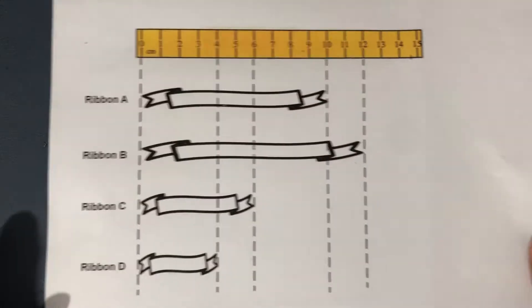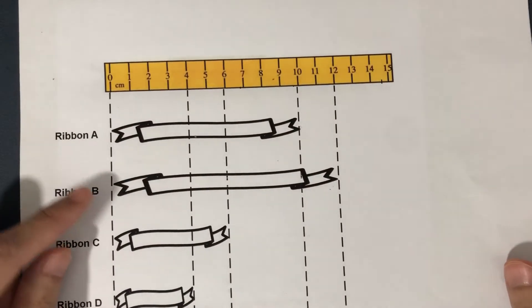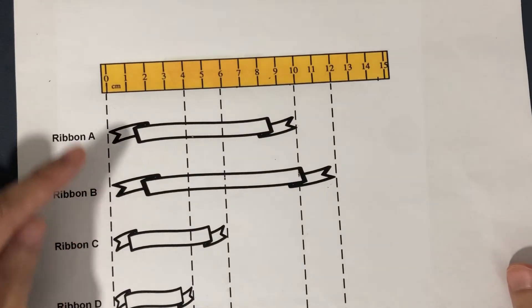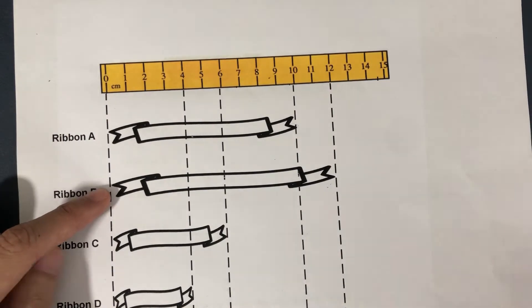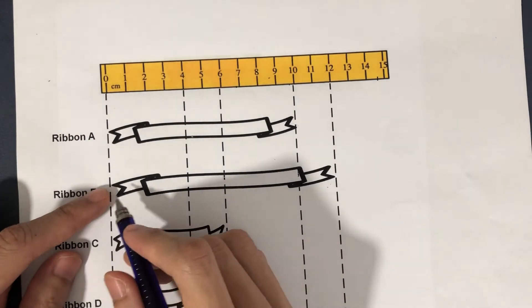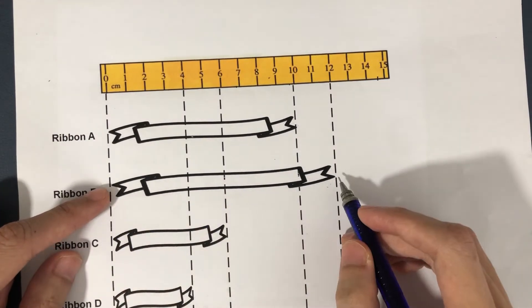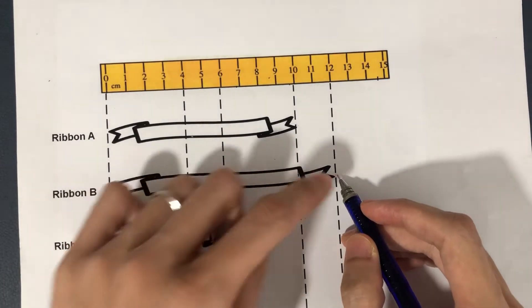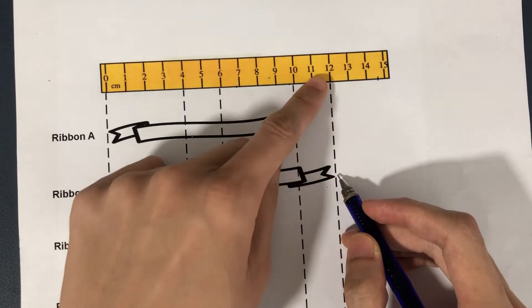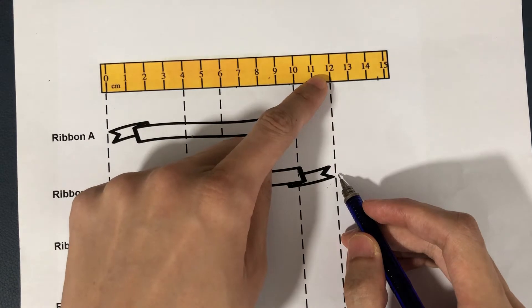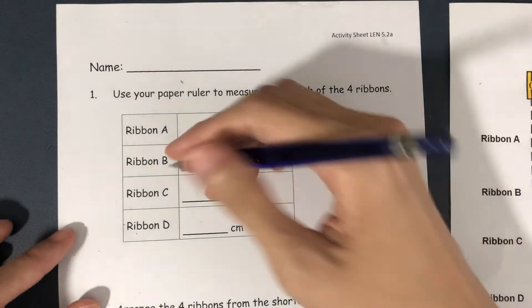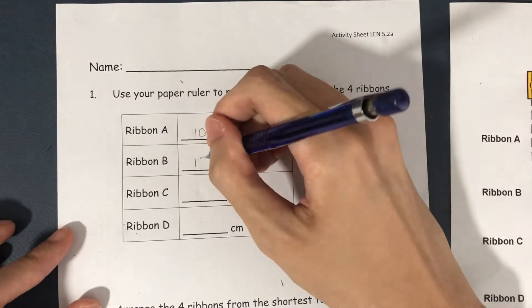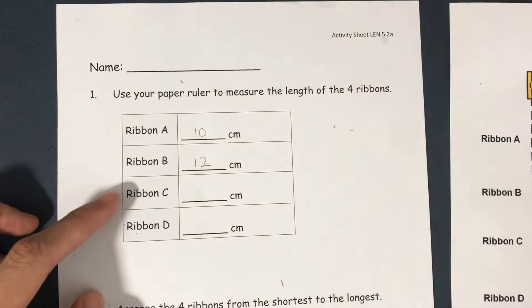Now, Ribbon B. Make sure that one end of Ribbon B is at the zero mark. Let's trace all the way to the end and read off from the ruler. How long is it? 12 cm long. So, let's write down 12.